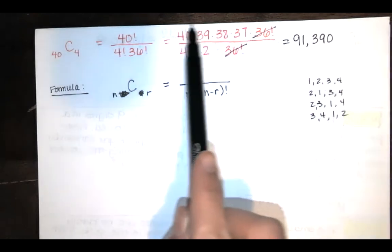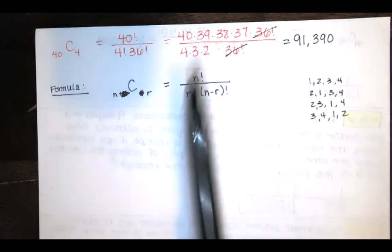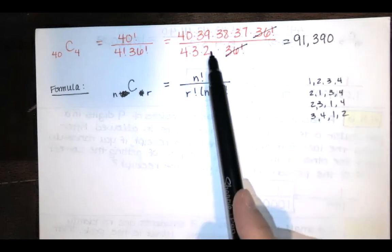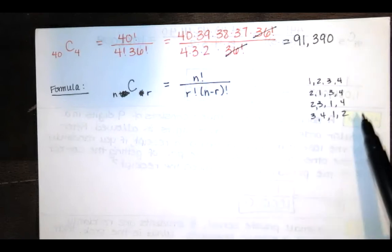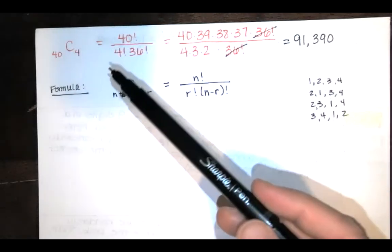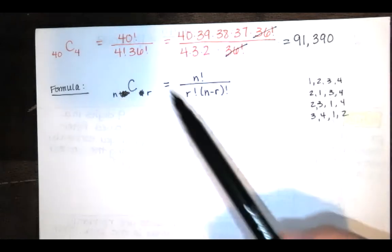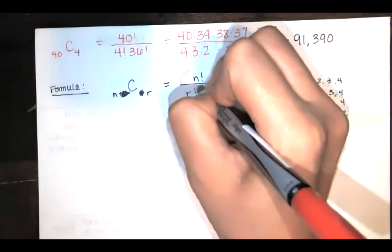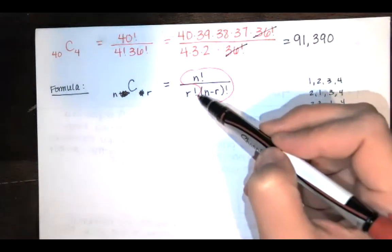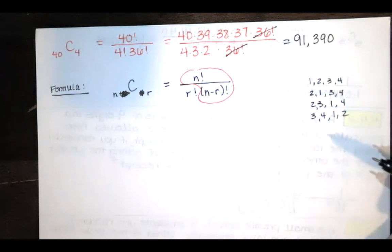So we have 4 times 3 times 2 times 1 ways that we can arrange those four numbers. So we take what would have been the permutation, and then we say, okay, I actually don't care about the order. So every time that I accidentally counted something twice, I want to divide that out. This part here gives you the permutation, the count for the permutation. And then if we divide by r factorial, that is dividing out all of the times we counted a group more than once when we meant to count that group only once.